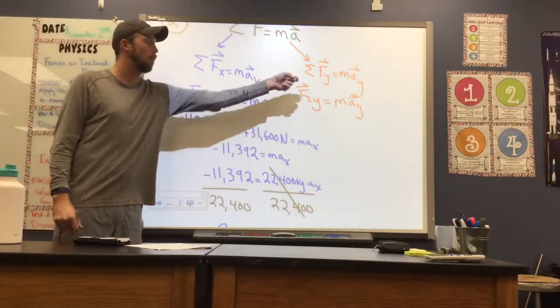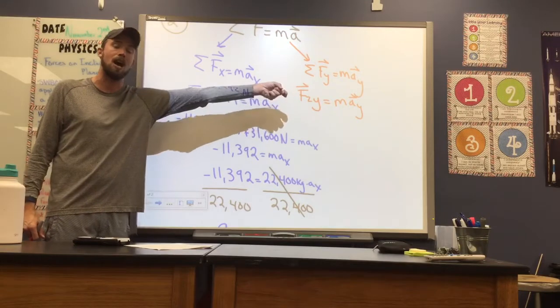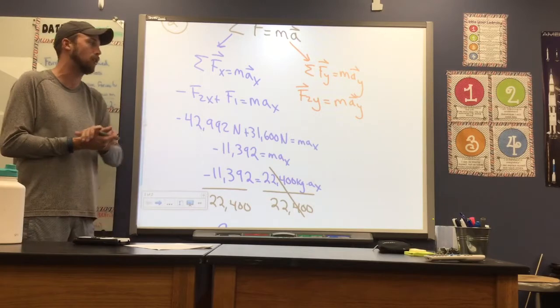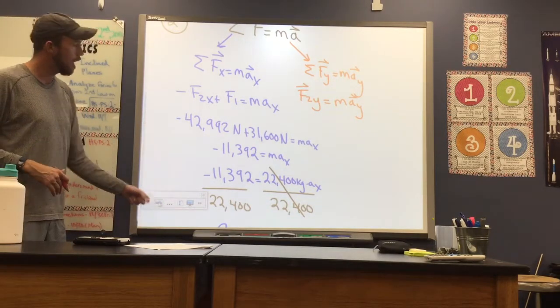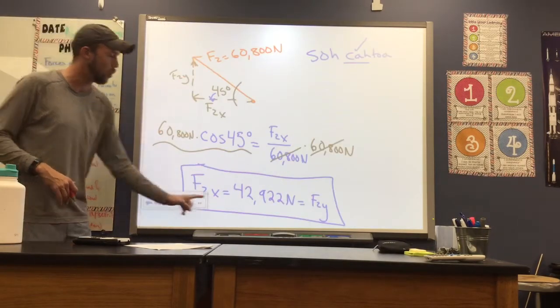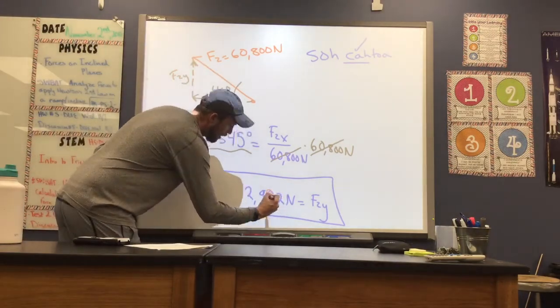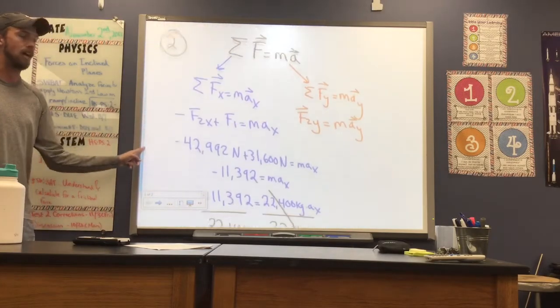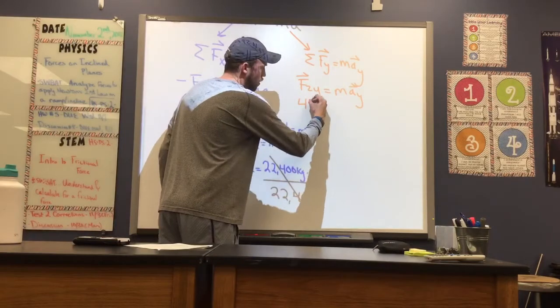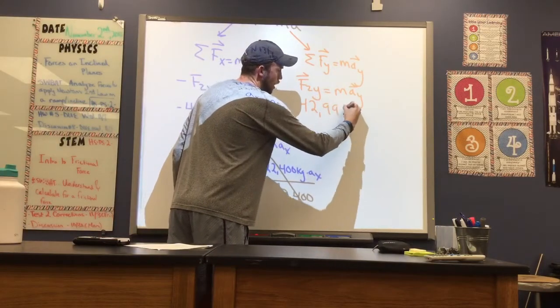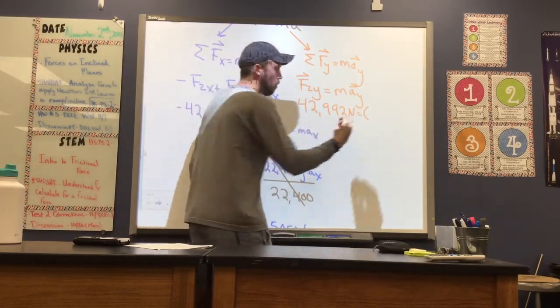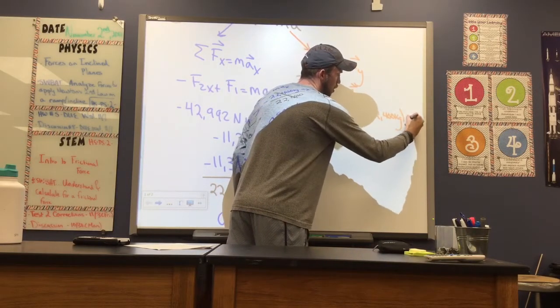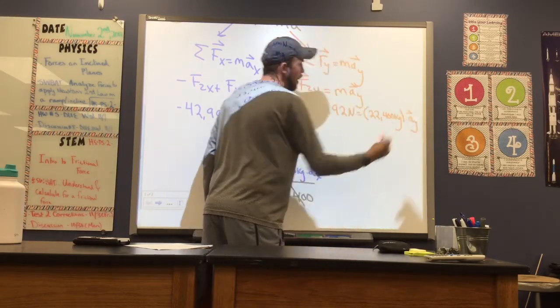So we realized in the previous problem that F2 in the y is the same as F2 in the x because the force is being applied at a 45 degree angle, so our components will be the same. And we found previously that F2 in the y direction was 42,992 newtons. I made a small mistake there, my apologies. So I'm going to take that value and I'm going to plug it into my equation. 42,992 newtons is equal to our mass here, which is pretty large, we have a big sailboat, 22,400 kilograms times our acceleration in the y direction.